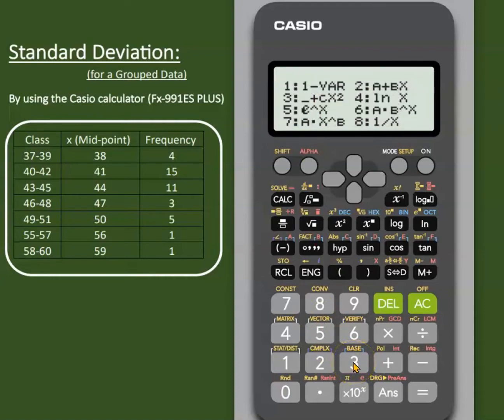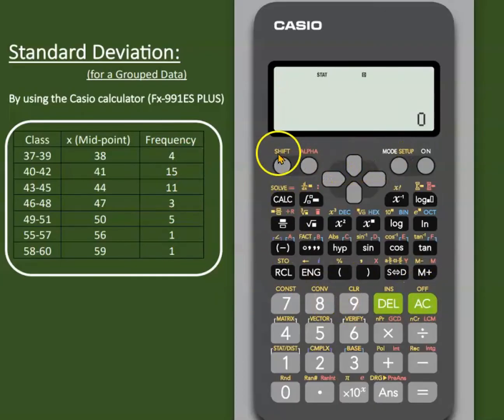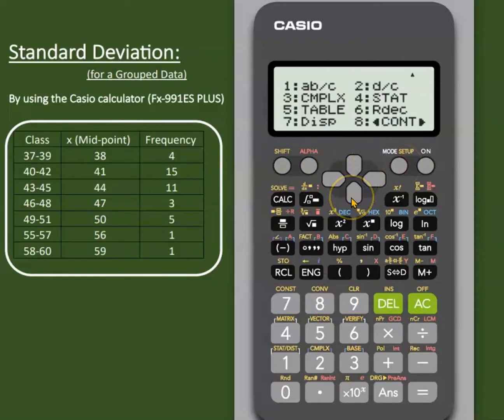First of all, we will take the statistic mode on the calculator, which comes under option 3. Before we proceed to the formula, we need to add one feature to the statistic mode, and that is frequency. So I'll clear the screen, then press shift and we'll reach to setup.